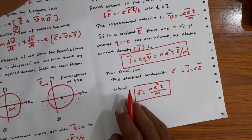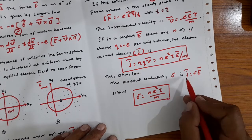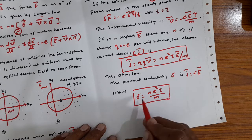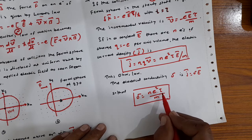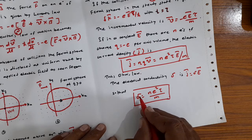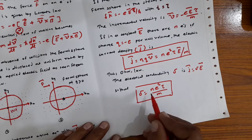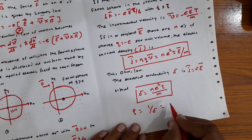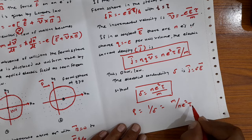Correlating with the general form of Ohm's law j̄ = σĒ, where σ is the electrical conductivity, we find the expression for electrical conductivity as σ = ne²τ/m. Knowing the electrical conductivity, we can also find the electrical resistivity, since resistivity is the reciprocal of conductivity. The resistivity expression becomes ρ = m/(ne²τ). Values of electrical conductivity and resistivity for elements can be found in any standard reference book.